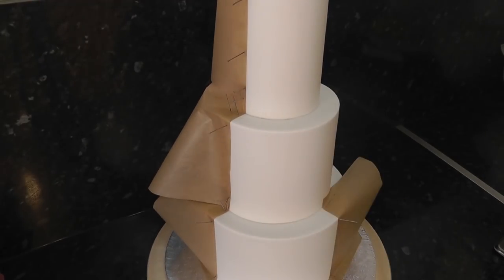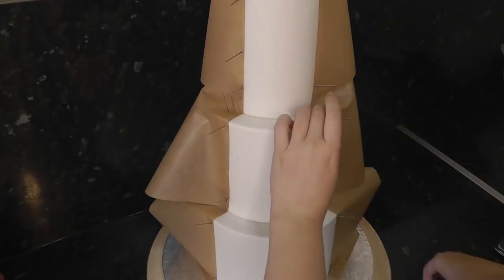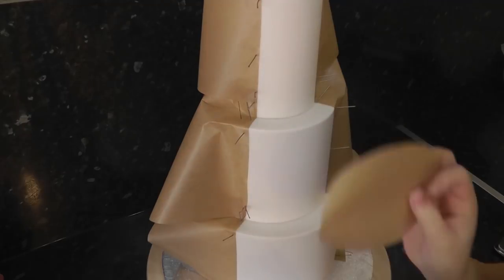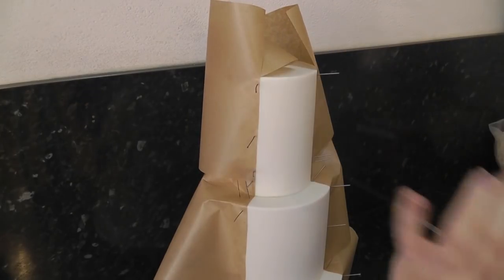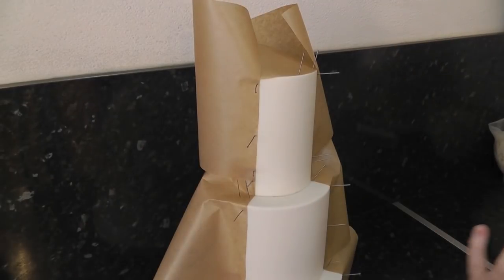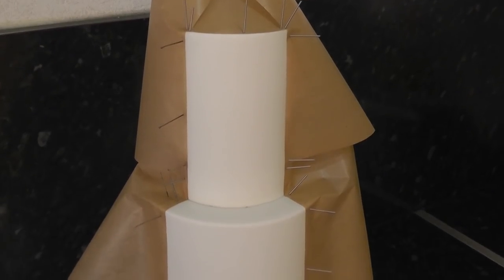Do the other side in the same way. For the top, cut out a circle of paper and pin that down as close to the edge as you can get it. Now you should have a fully masked area ready to be colored in.